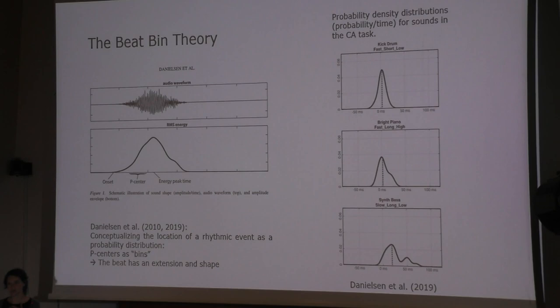This has been put forward by music research, showing that the perception of a beat is not defined as a point in time but rather as a probability distribution, as visualized here on the right side. This concept has been referred to as the beat bin by Danielson et al.